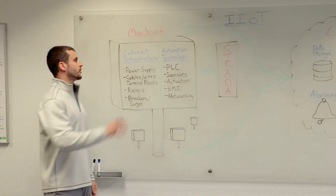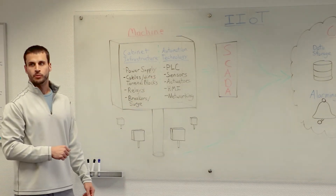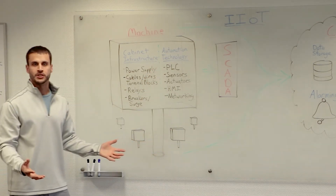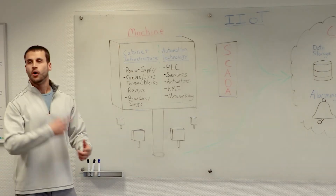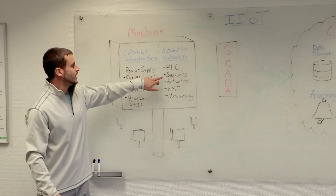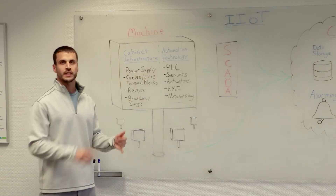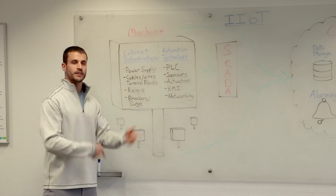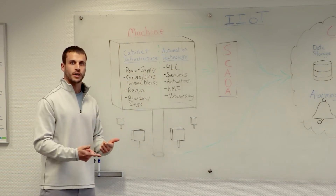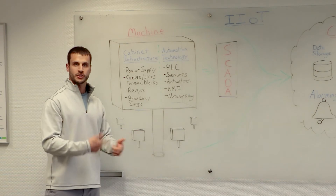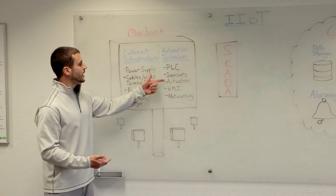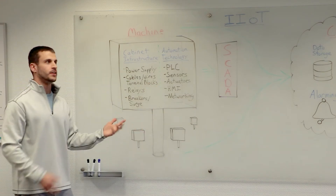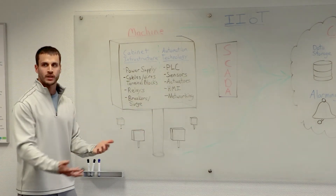At the center of the automation technology, we have the PLC, or the Programmable Logic Controller. The PLC is really the brains of the operation. It is the computer that is collecting all this data being read by sensors out in the field. These sensors are reading things like temperatures, pressures, voltage, and current. The PLC takes all of that data, does some processing on it, and then uses that data to make logical decisions and turn on and off actuators or outputs — things like your pumps, motors, and valves, the components actually running the process of the machine.